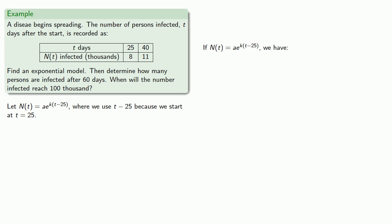So if N(t) is ae to the power k(t minus 25), we know what happens at 25. And we know that N(25) is equal to 8. So that gives us a. And we also know that N(40) is equal to 11. And since we already know the value of a, we can solve for k.